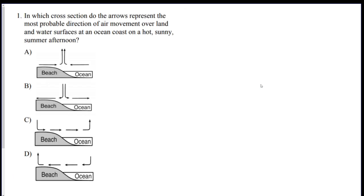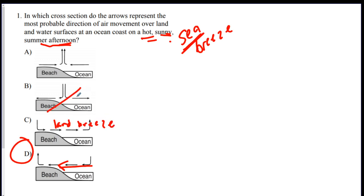Okay, so let's see if we can get some questions right. Question one, in which cross section, which just means a side view, do the arrows represent the most probable direction of air movement over land and water at a coast on a hot, sunny summer afternoon? So if it's afternoon and it's hot and sunny, you're going to get a sea breeze. Remember, sea breeze means the wind is coming from the sea. So look at, find the arrows where the arrows are coming from the sea. D is the best answer. It's going here. This is a land breeze because the breeze is coming from the land and this doesn't happen and that doesn't happen. It's either always going to be this one or this one.